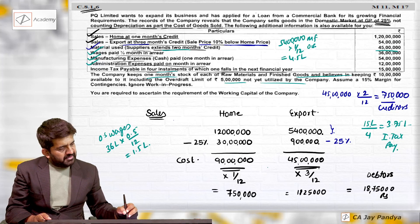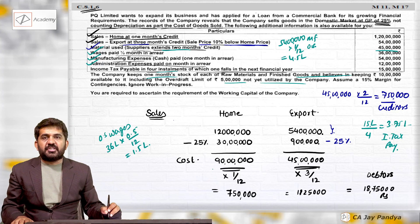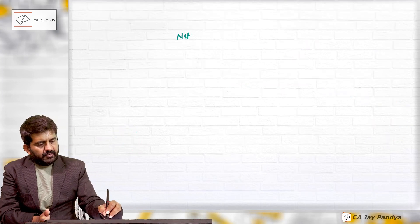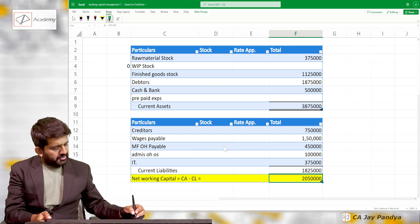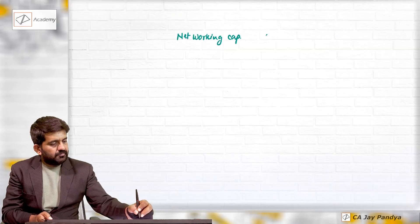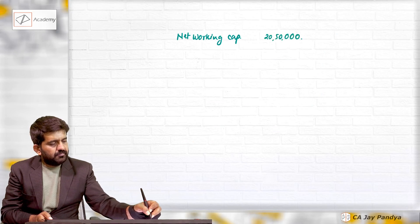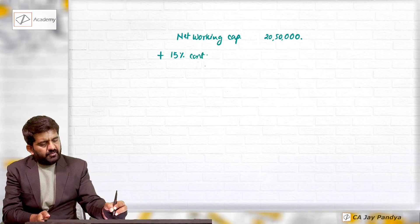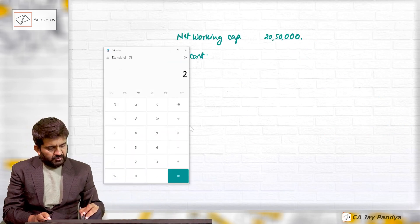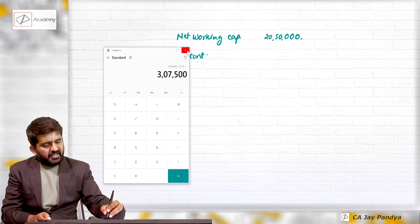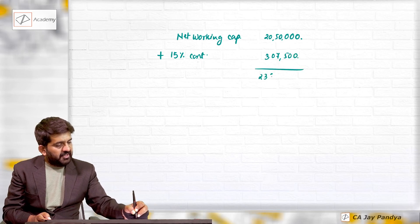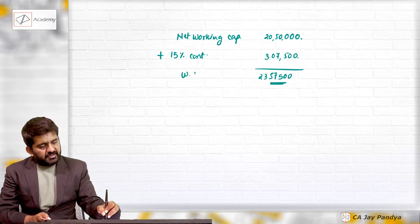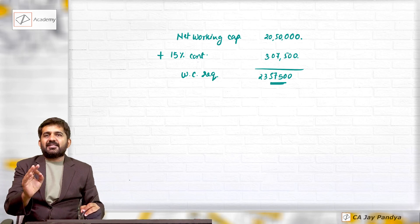Now adding 15 percent margin for contingencies: net working capital is 20 lakh 50,000. Adding 15 percent contingency margin — 20 lakh 50,000 multiplied by 15 percent = 3 lakh 7,500. Total working capital required = 23 lakh 57,500.